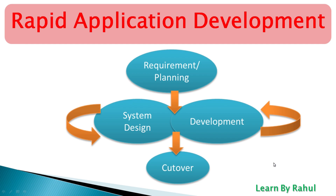RAD, or Rapid Application Development, is a software development process based on prototyping without any specific planning. There is less attention paid to planning and more priority given to development tasks. It targets developing software in a short span of time, with less long-term planning involved in the process.